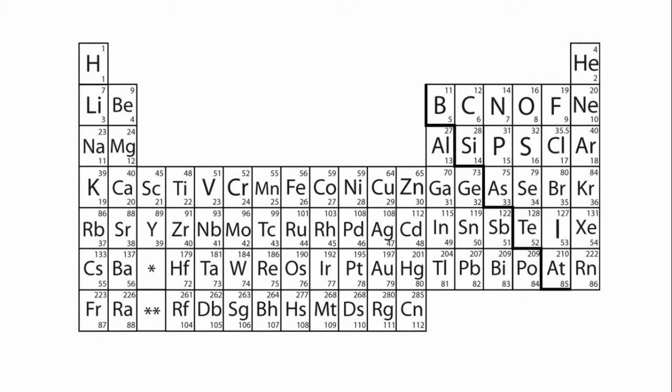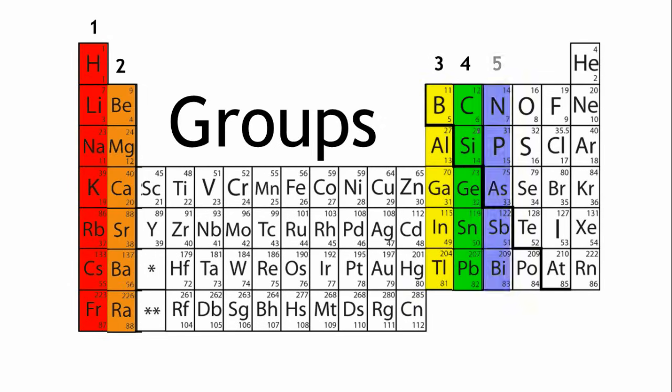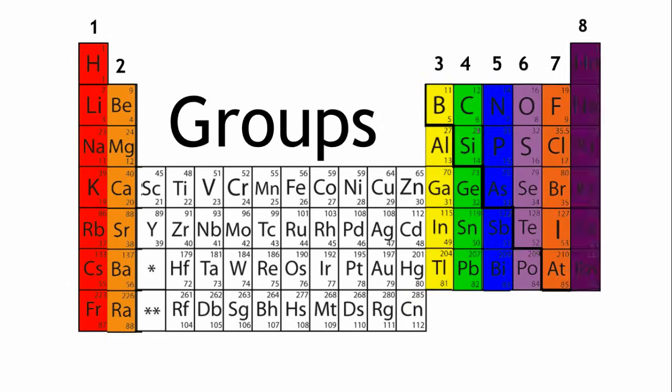The columns going down from top to bottom are the groups. Elements in the same group also have something in common. Elements in the same group have the same number of electrons in their outermost shell. The electrons in the outer shell are called valence electrons. This just means that these are the electrons available for reactions and bond formation.